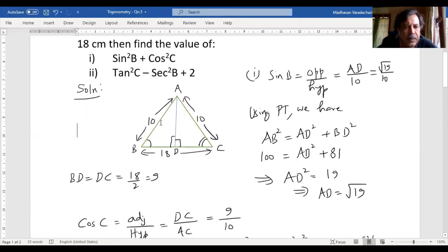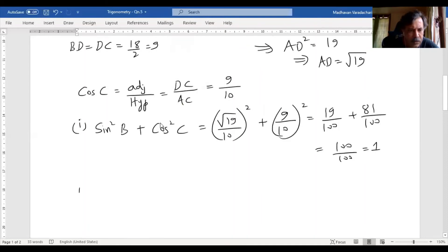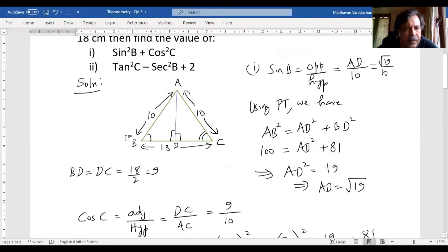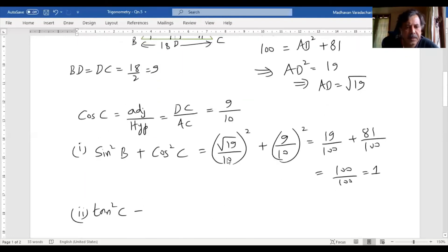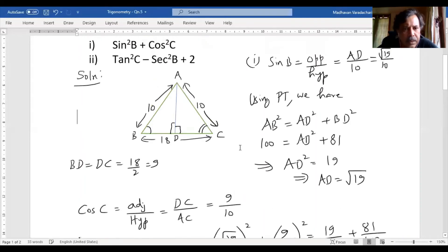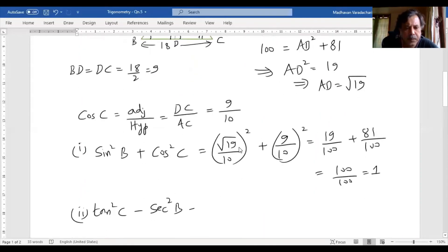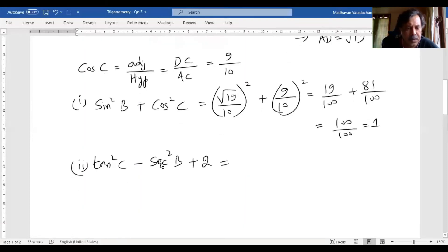Then the second question. Second question is we are supposed to find tan square C minus secant square B, and then to be added with 2. This is what we are supposed to find. So for that first we are supposed to find what is tan C. Tan C, it is adjacent by opposite.